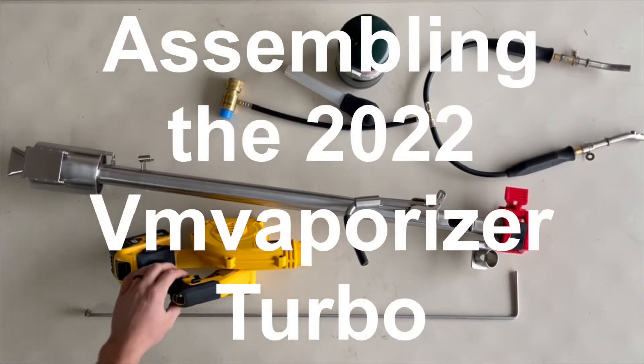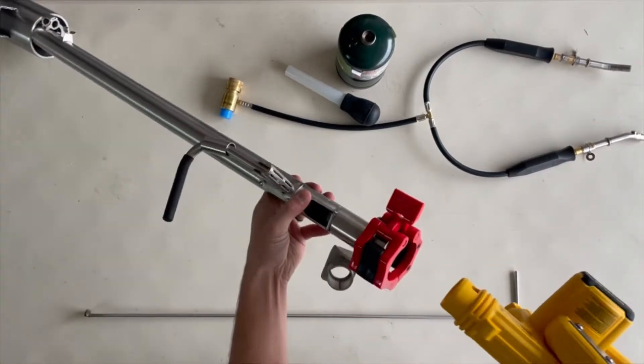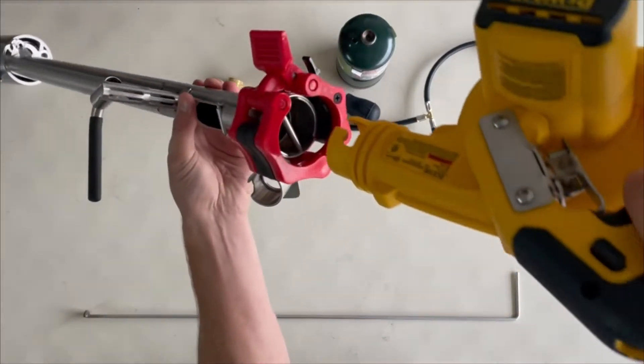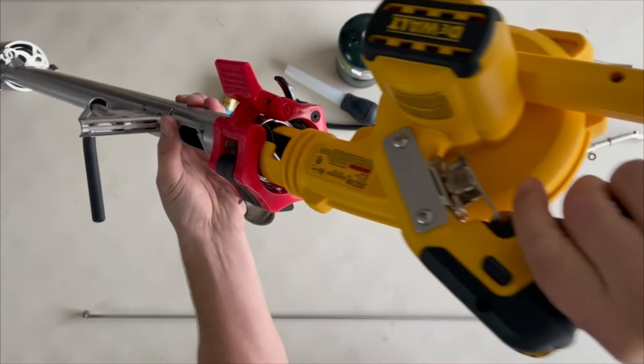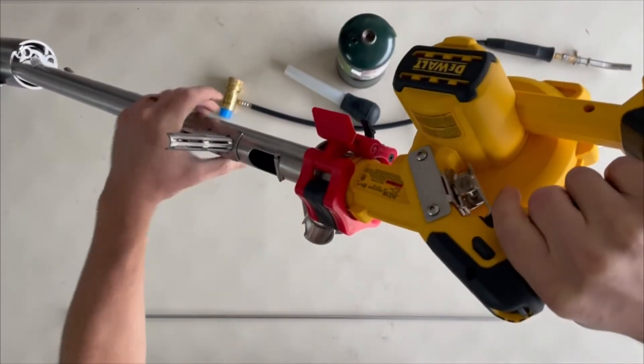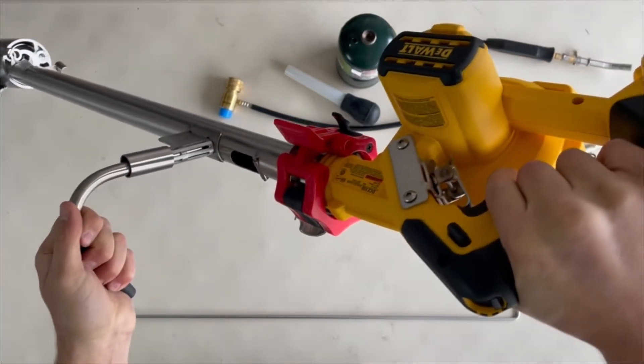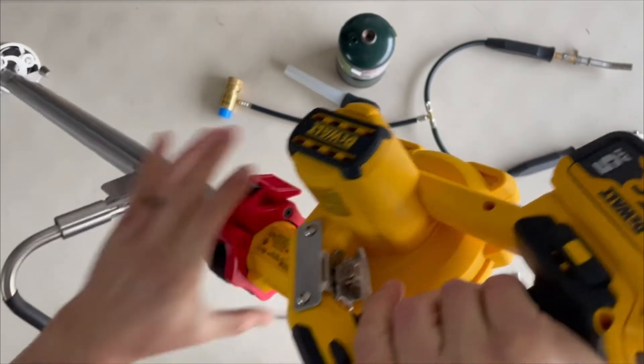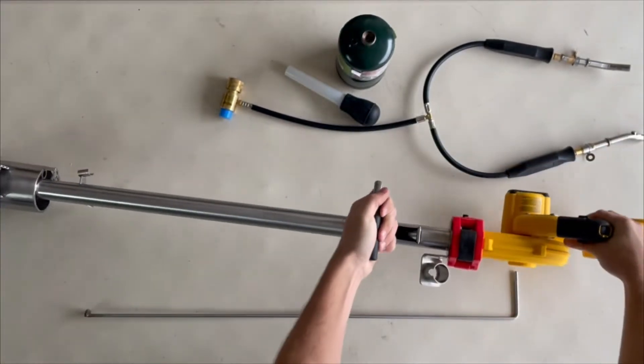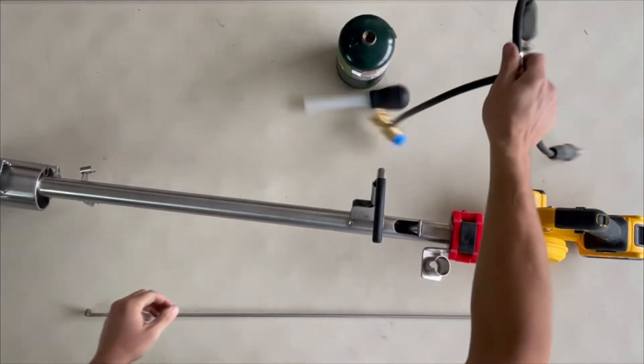Hey guys, I'm going to show you how to assemble the VM vaporizer. First, you take the blower and twist it into the metal rod placement like this, then twist it to the right. Hold the handle and twist it right until it clicks. Once it clicks, you can close the red clamp. Now you have your blower assembled.